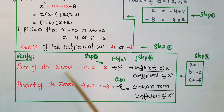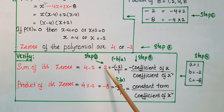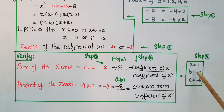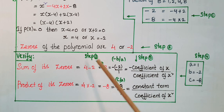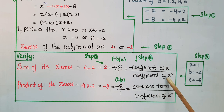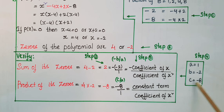Now verify the relationship. Sum of zeros = 4 + (-2) = 2. Here a = 1, b = -2, c = -8. So -b/a = -(-2)/1 = 2. Sum of zeros equals -b/a, hence verified. Product of zeros = 4 × (-2) = -8. And c/a = -8/1 = -8. Product of zeros equals c/a, hence verified.